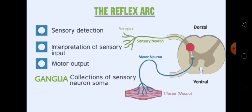In the reflex arc, we will cover the work of the reflex arc, the figure of the reflex arc, and the function of the reflex arc. The first important process is sensory detection. The second one is interpretation of the sensory input, and the third one is motor output. Look at this figure and you will understand the topic — first it senses, then interpretation of the sensory input, and lastly motor output.